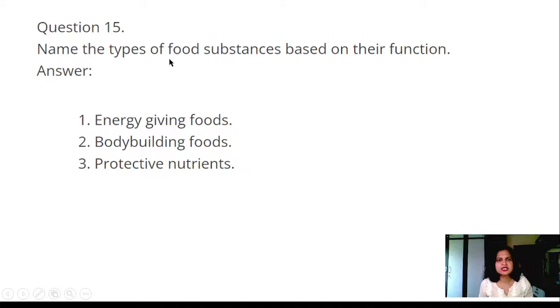Question 15: Name the types of food substances based on their function. Answer: Energy-giving foods, body-building foods, protective nutrients.